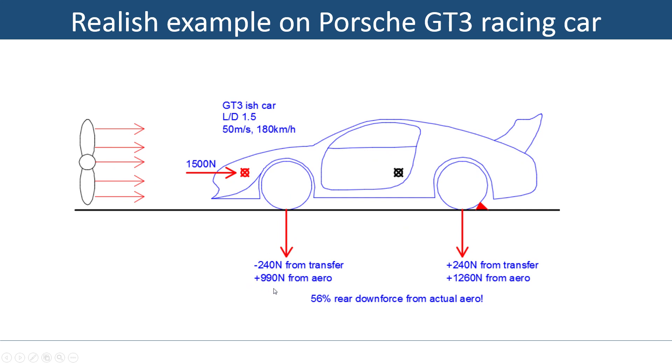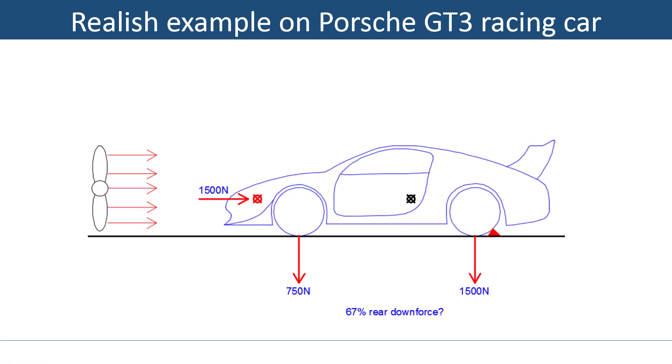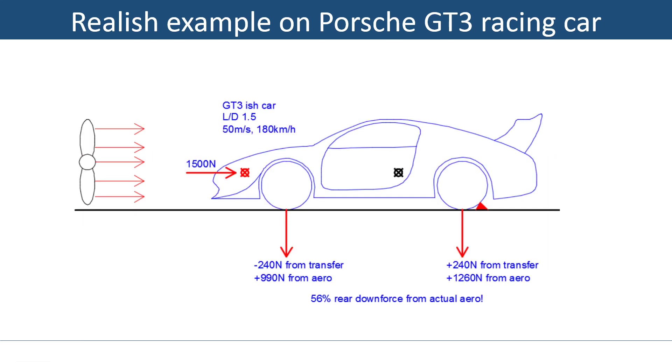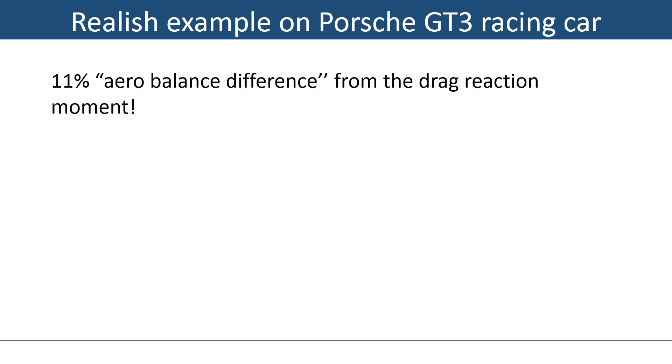If you calculate with that, on the front we have a total of 750, so this is what we measured, but this includes 240 upward lift from the weight transfer, the backflip drag thing. At the back we have, this also includes 240 downforce from the weight transfer thing. If you calculate it again, compensating for this drag-induced backflip weight transfer moment, we actually get 990 on the front from the aero and 1260 at the rear. Our actual, in my opinion, actual aero distribution is 56% rear. Quite a big difference from 67, don't you think? That's a huge difference on a GT3 car.